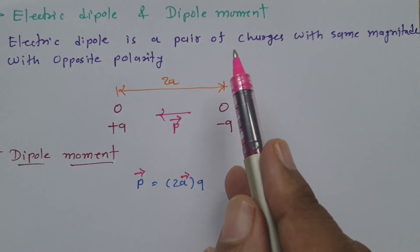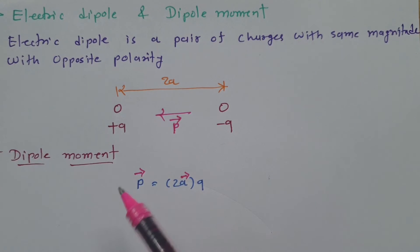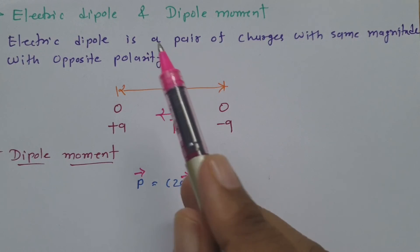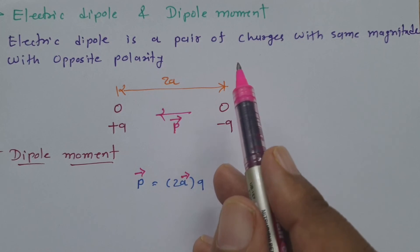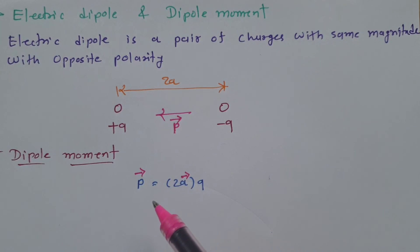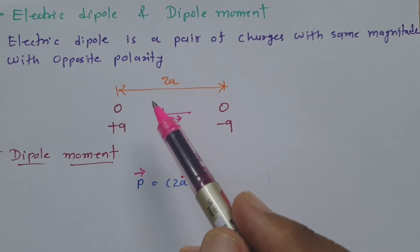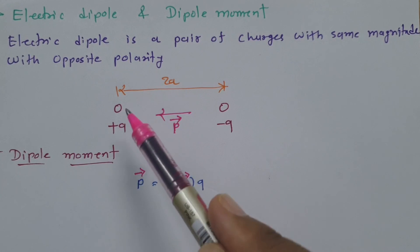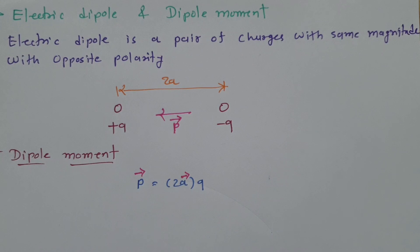So electric dipole is a pair of two charges with the same magnitude and opposite polarity, and dipole moment is charge into distance between the two charges in the dipole. I am making this video because this fundamental is needed in the calculation of electric field due to a dipole and electric potential due to a dipole. I hope you have understood this session. Thank you so much for watching.